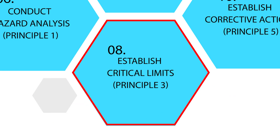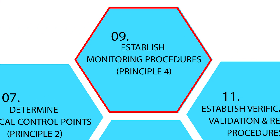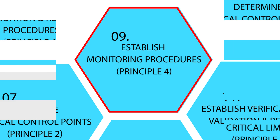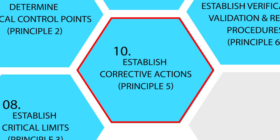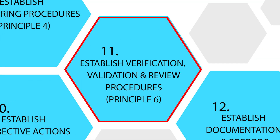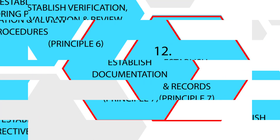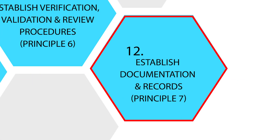Principle three is to establish critical limits for the critical control points. Principle four, step nine, is to establish monitoring systems. Principle five is to have corrective actions if the CCPs go out of control. Principle six is verification and validation. Last but not least, the seventh principle is to have proper documentation and record keeping of the HACCP system.